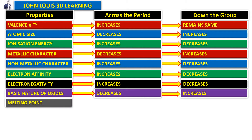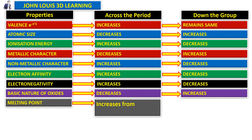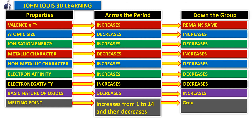Melting point and boiling point follow a similar trend. Across the period, melting point increases from groups 1 to 14, then decreases from group 14 to 17. Down the group, for groups 1, 2, 13, and 14, melting point decreases as we move from top to bottom. But for groups 15 to 17 — the non-metals — it increases going down the group.